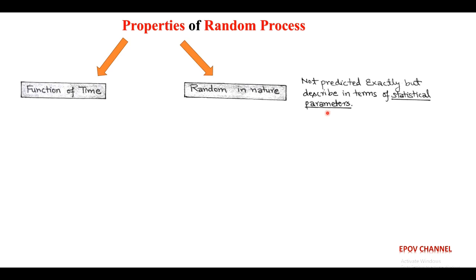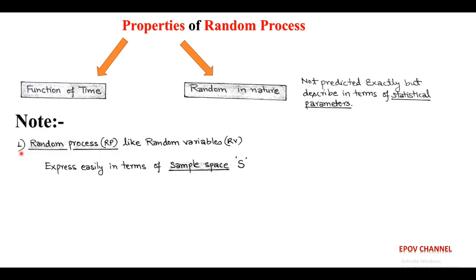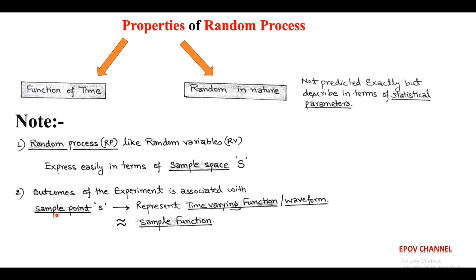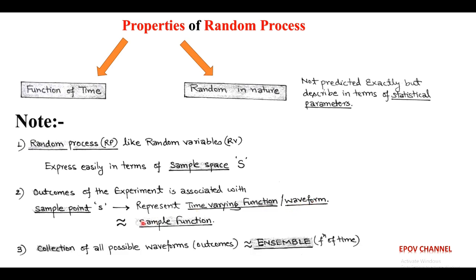Now, we note a point regarding random process. First point is, like random variables, random process can easily be expressed in terms of sample space, denoted by capital S, and the outcome of any random experiment is associated with sample points, denoted by small s. These sample points correspond to a sample function, which represents a time-varying function or a waveform. And the collection of all possible outcomes is called as ensemble, which is also a function of time.